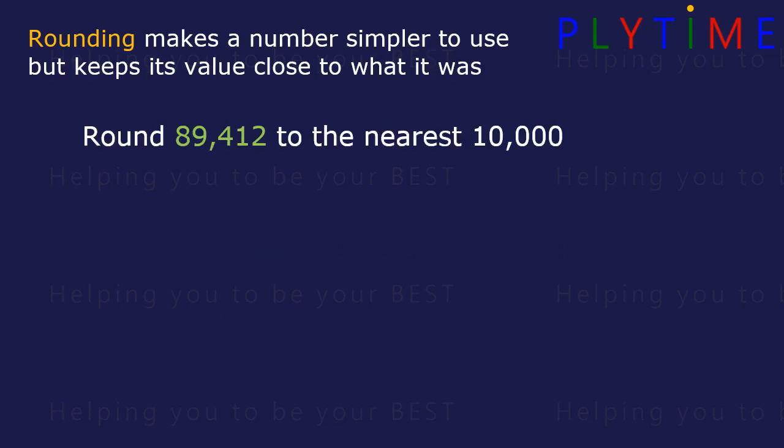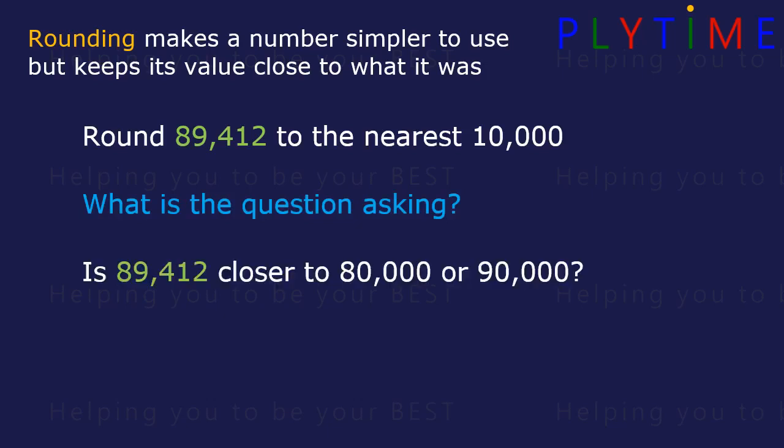Round 89,412 to the nearest 10,000. What's the question asking? It's saying is this closer to 80,000 or to 90,000?